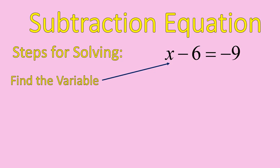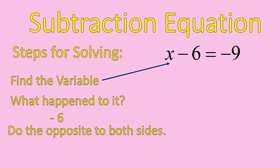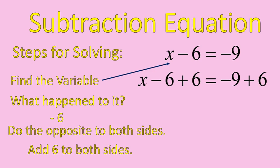So I find my variable, x. I ask myself, what happened to x? Or what's connected to x? Well, I have a minus 6. So I'm going to do the opposite to both sides. So I'm going to add 6 to both sides of this equation. x minus 6 plus 6, cancel each other out. I'm left with x by itself on the left side of the equation.